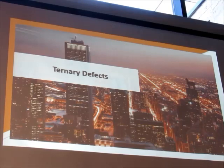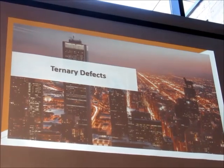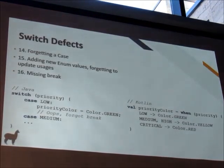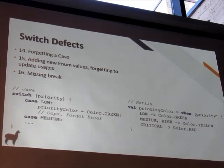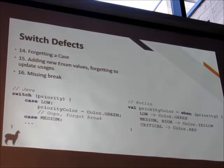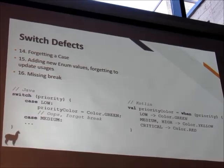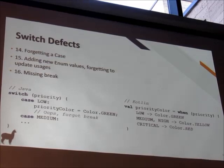Fall-through in Java allows you to handle multiple conditions in a switch. Is there an equivalent in Kotlin? Yes, good question. In Java, if you skip the break statement, it falls through — that's what you would do for similar cases. In Kotlin, you can combine them with a comma. Like 'medium' and 'high' there — you separate them with a comma.